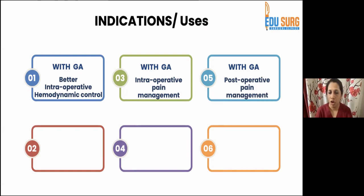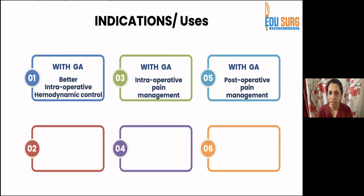When using regional anesthesia in combination with general anesthesia, it is always better to give it in the initial part of the procedure — either before or immediately after induction of GA. Give your epidural or block early, because it acts better that way and is more useful than giving it at the end of surgery.